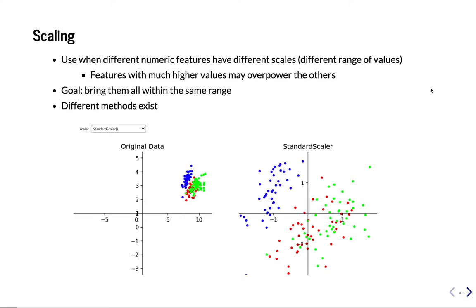So first, scaling. We do scaling whenever we have data which is on different scales. For instance, in this case we have the Iris dataset, slightly modified. We see that in one feature the values are between 2 and 4, and here they are a bit larger. We want to bring these to the same scale. There exist a number of different ways to do that.